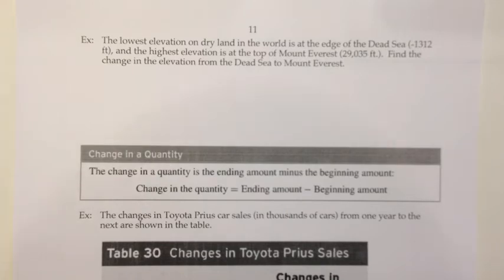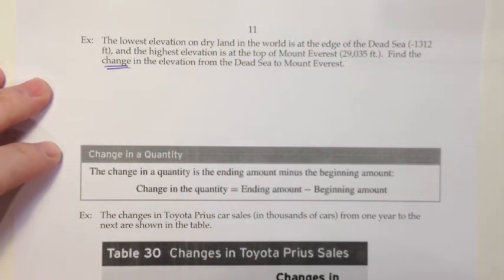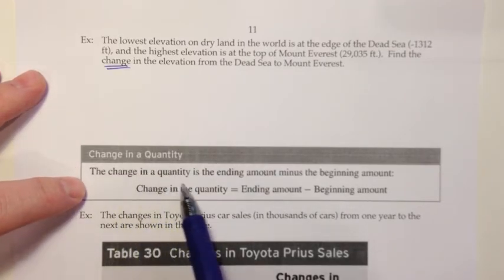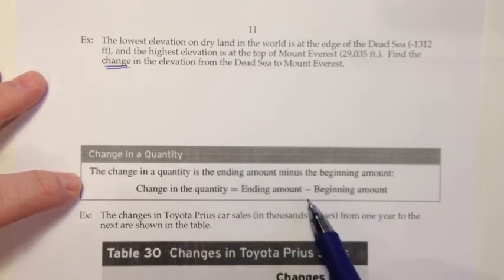Alright, continuing on in section 2.4. The lowest elevation on dry land in the world is at the edge of the Dead Sea, negative 1,312 feet. And the highest elevation is at the top of Mount Everest, 29,035 feet. Find the change in elevation from the Dead Sea to Mount Everest. So the key word I think here is the word change. We're trying to find the change in elevation. When we're trying to find the change in quantity, we want to do a subtraction. In fact, we have that defined for us right down here. If you're doing the change in a quantity, then the change in the quantity is the ending amount minus the beginning amount. So it does turn into a subtraction when you're doing change.